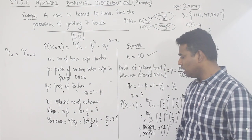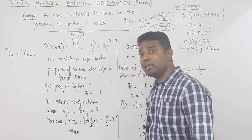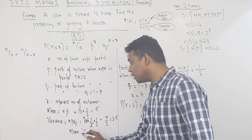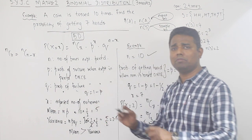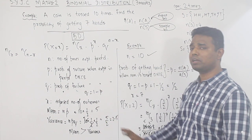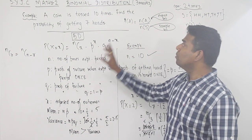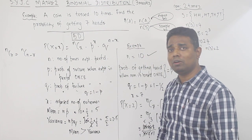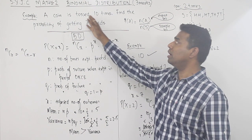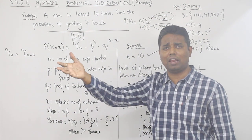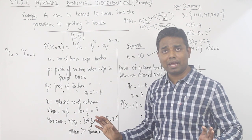Very important observation: your Mean will always be greater than Variance. Here Mean = 5 and Variance = 2.5, which confirms this. Remember: normal probability uses N(A)/N(S), but when the number of trials is very large, the shortcut is Binomial Distribution. Thank you very much.